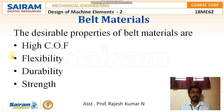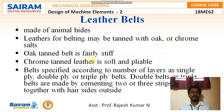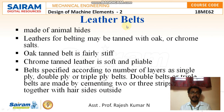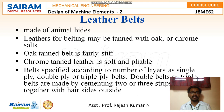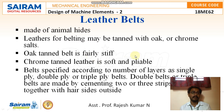The desirable properties of belt materials are high coefficient of friction, flexibility, durability, and strength. The material highly recommended is leather belts, which are usually made of animal hides. Leather for belting may be tanned with oak or chrome salts. Oak-tanned belt is fairly stiff compared to the other, and chrome-tanned leather is usually soft and pliable. Belts are specified by number of layers: single ply, double ply, or triple ply.